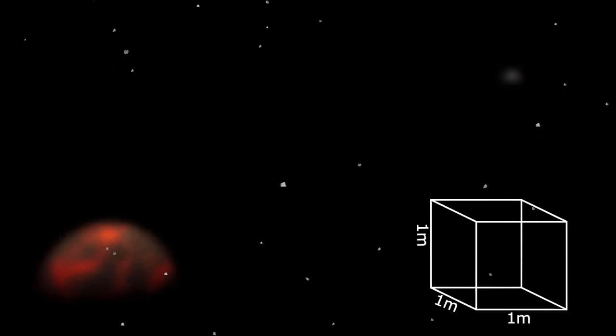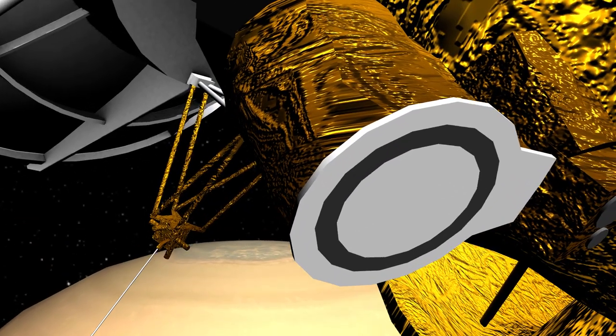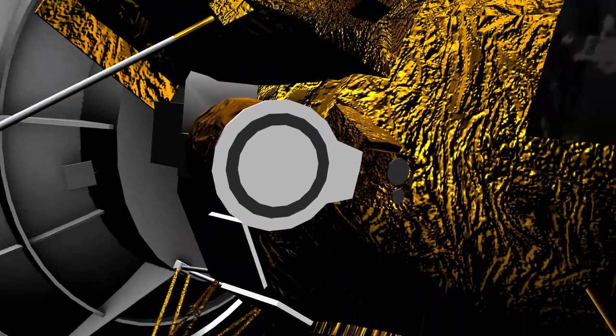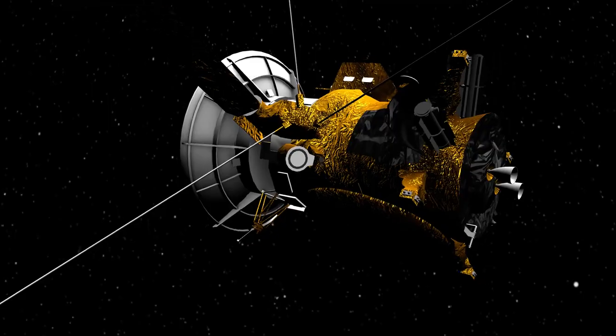To analyze cosmic dust, we first need to detect it. And in this video, we're going to use a detector called the Cosmic Dust Analyzer, or CDA for short. The CDA was flown on the Cassini-Huygens mission to Saturn.